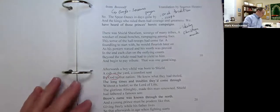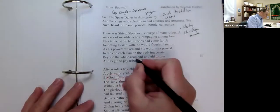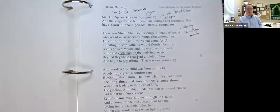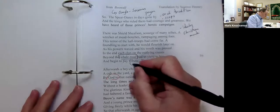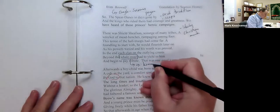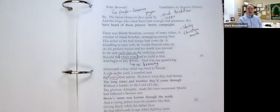Pop quiz. Did anybody catch this one? Just kidding. It's not really a pop quiz. It says, what is that called? Do you remember? Beyond the whale road, had to yield to him and begin to pay tribute. What is this? This is an example of what? A kenning.